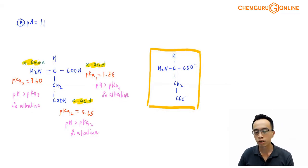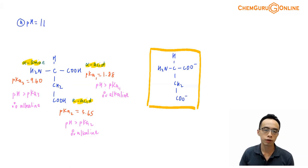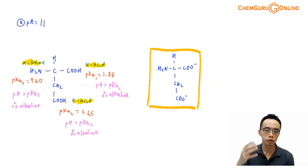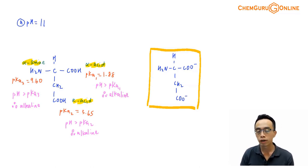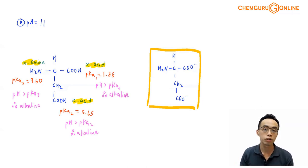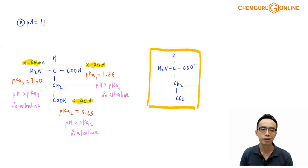After this discussion, we have a better understanding of how to draw the major species of an amino acid at different pHs. Each functional group has its own pKa value; we compare the pH of the solution against each functional group and decide whether the solution is acidic or alkaline with respect to it. An acid functional group responds to an alkaline solution, and a base responds to an acidic solution; otherwise, the functional group remains unchanged. If you learned something useful, please give a thumbs up, like this video, and subscribe for more weekly video lessons.